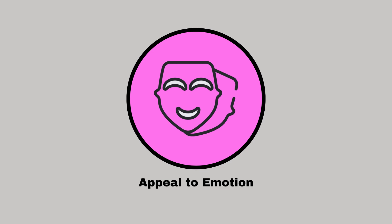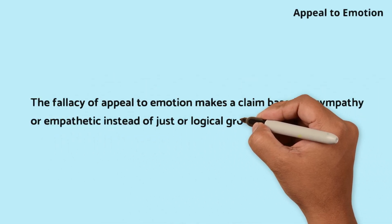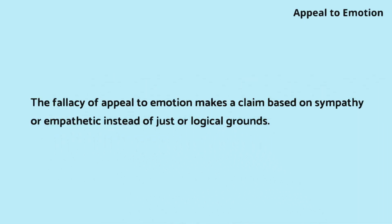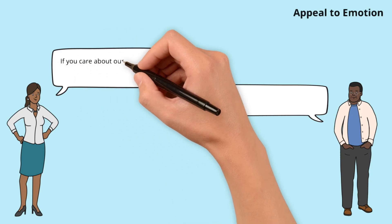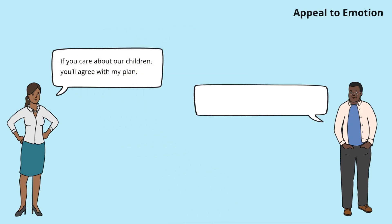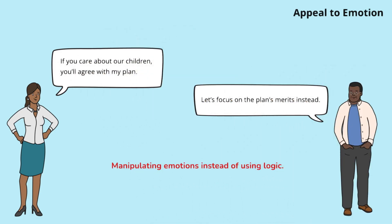Appeal to emotion. The fallacy of appeal to emotion makes a claim based on sympathy or empathy instead of just or logical grounds. Grace tries to manipulate emotions to win support for their plan. Alex redirects the focus to the plan's merits, emphasizing logical reasoning over emotional appeals.